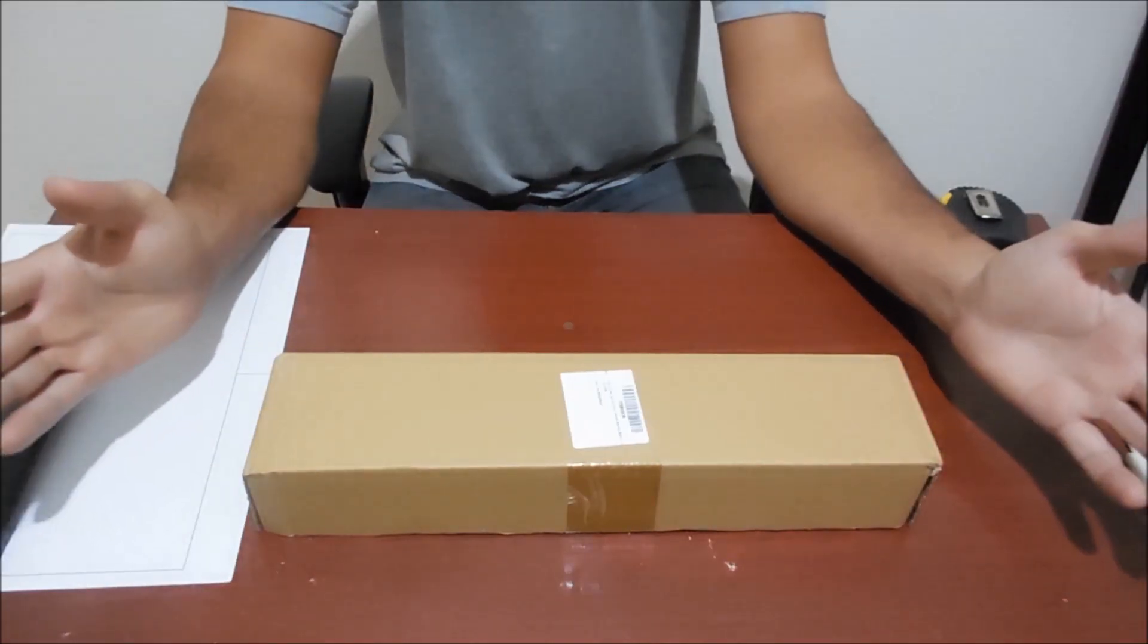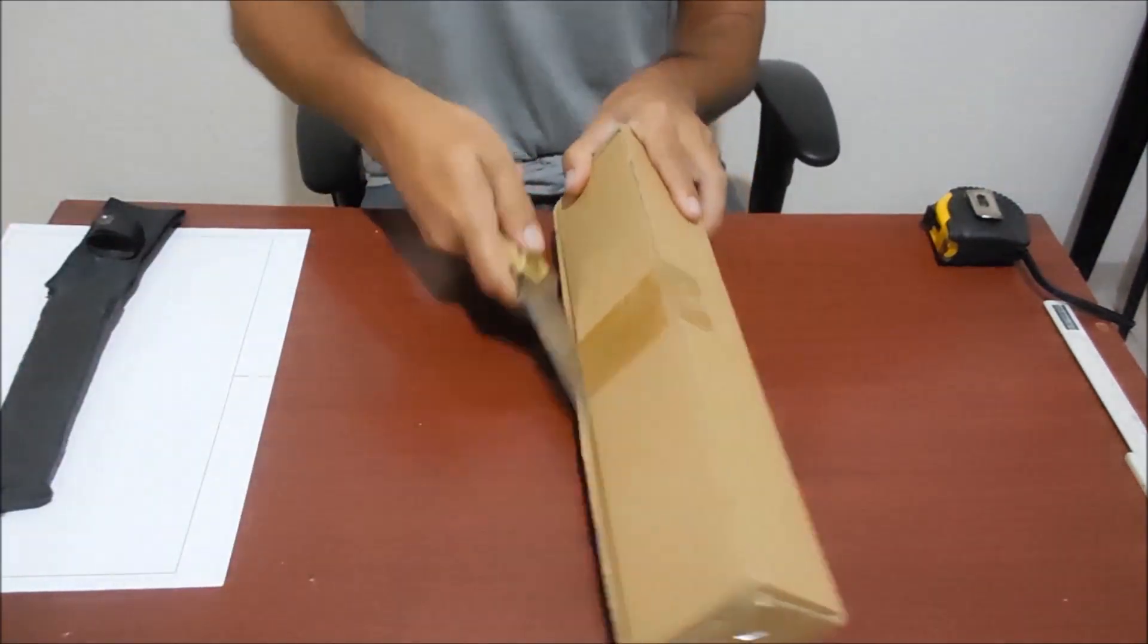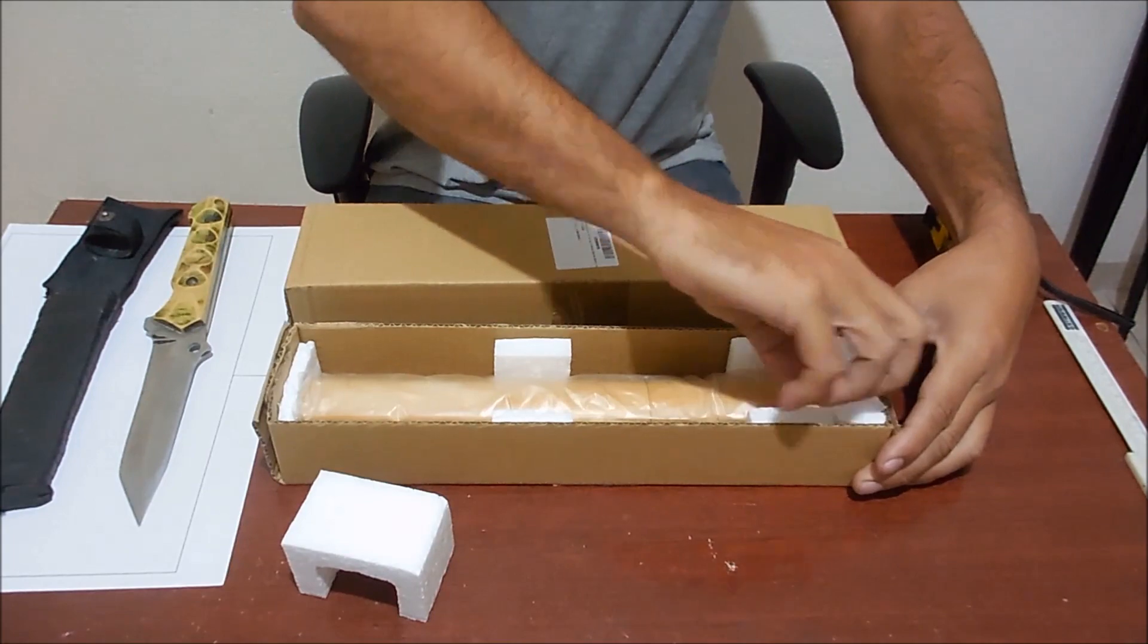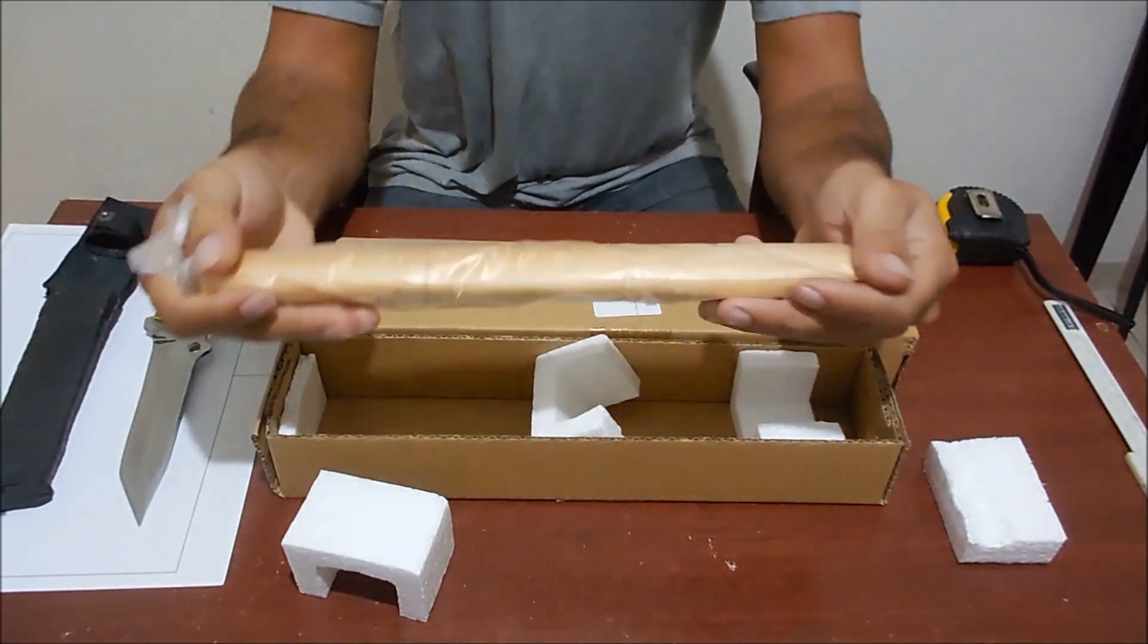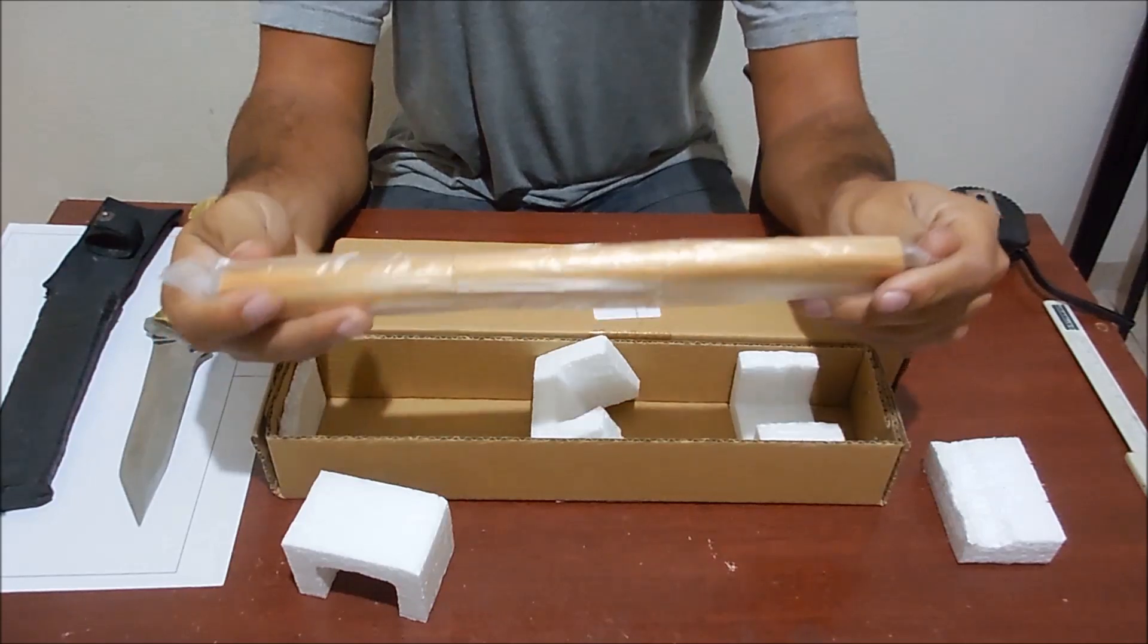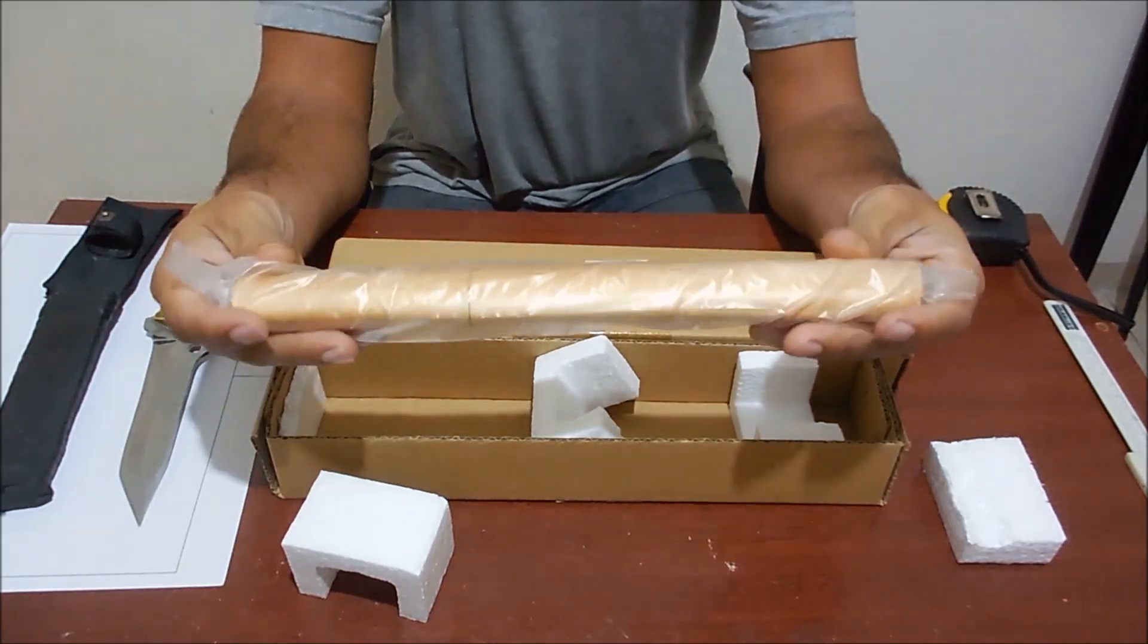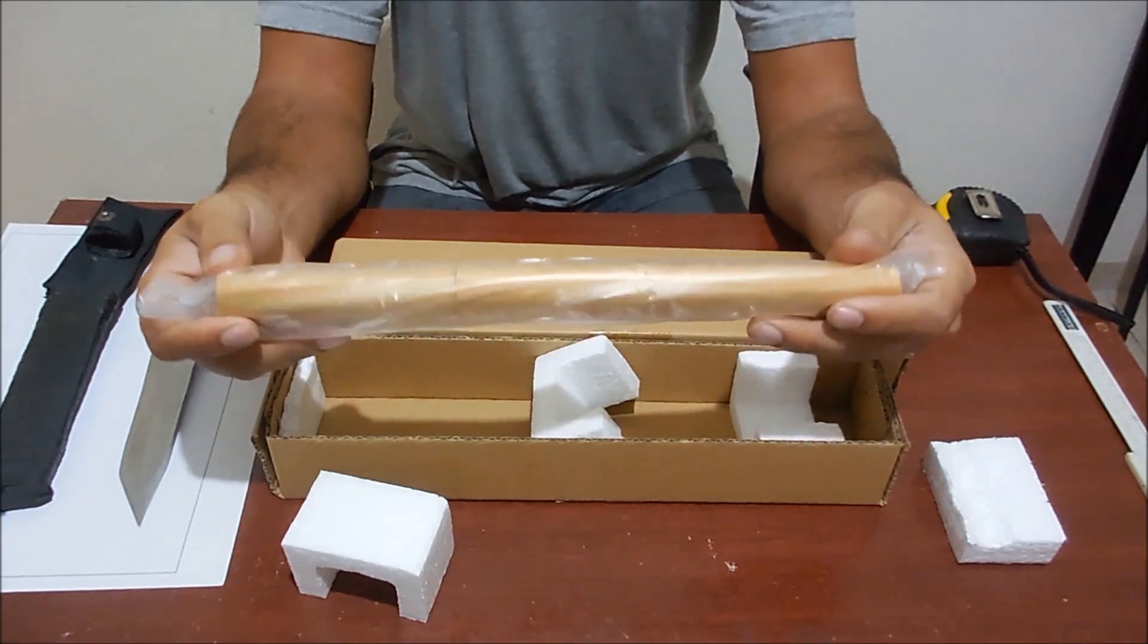Well, let's do the unboxing. Here you can see it's a Tanto with the koshirai of a shirasaya. Now let's do it.